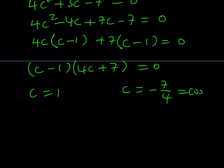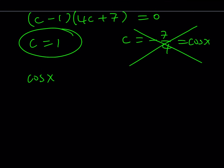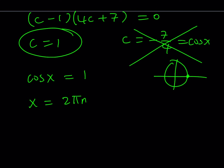Remember, c is cosine x, and cosine cannot be less than negative 1 nor greater than 1. Negative 7 fourths is obviously less than negative 1, so this solution does not count. We go with c equals 1, meaning cosine x equals 1. On the unit circle, cosine equals 1 at only one location: 0 and multiples of 2π.